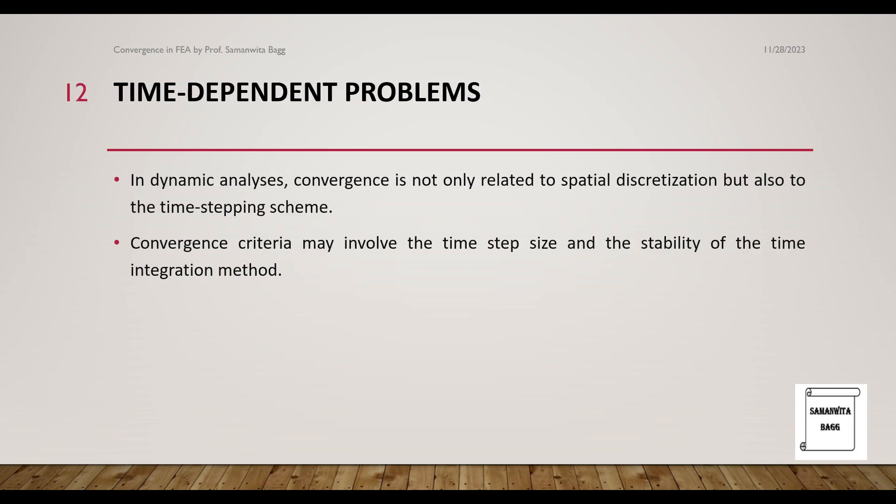Time-dependent problems: In dynamic analysis, convergence is not only related to spatial discretization but also to the time stepping scheme. Convergence criteria may involve the time step size and the stability of the time integration method. You need to understand that spatial discretization, which means when you are just trying to mesh along a particular axis, it is not going to help. Sometimes you need to also give a proper time step value. For example, it will start from 0 to 0.001, then 0.002, so you have a step difference of 0.001.